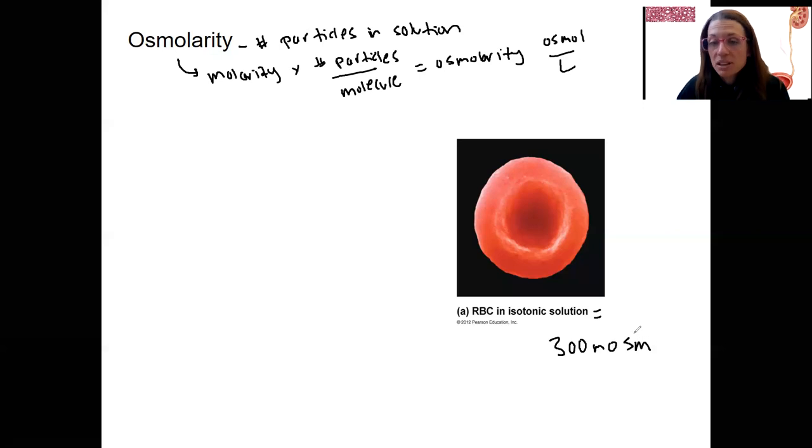300 milliosmols is the concentration of all the stuff in or surrounding your red blood cells, so in your plasma. It's a measure of solute concentration based on what's in that solution. Isotonic means happy cells. Iso is the same. There's no net movement out and in. These are equal. We're in equilibrium.